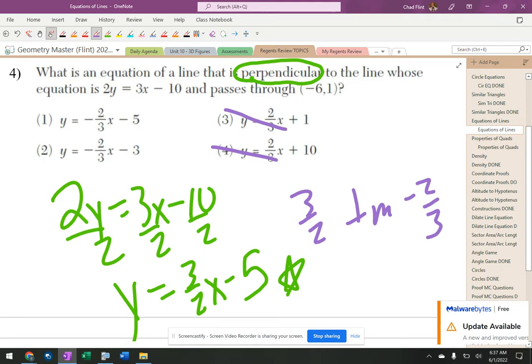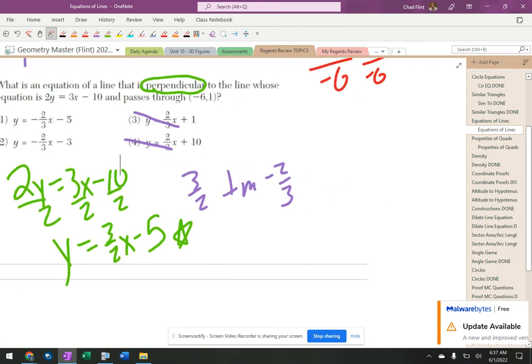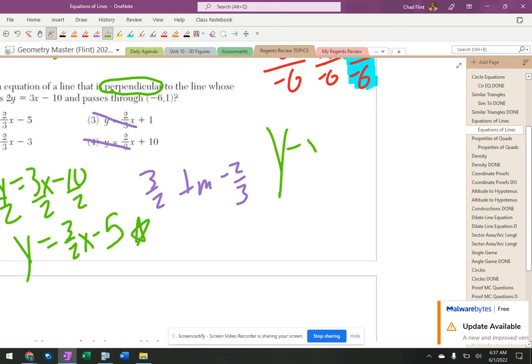So what do I do? I'm just going to go ahead and go over here to the side, and I'm going to put in y minus y1 equals m times x minus x1.